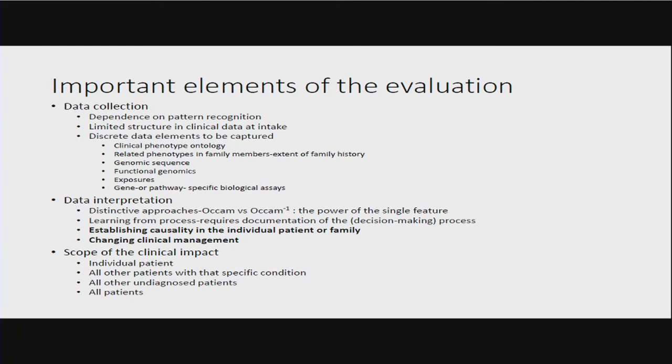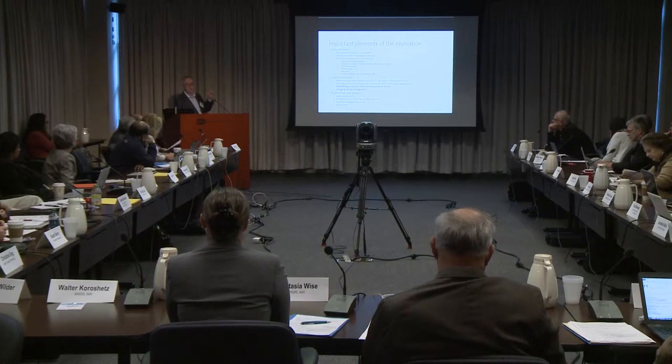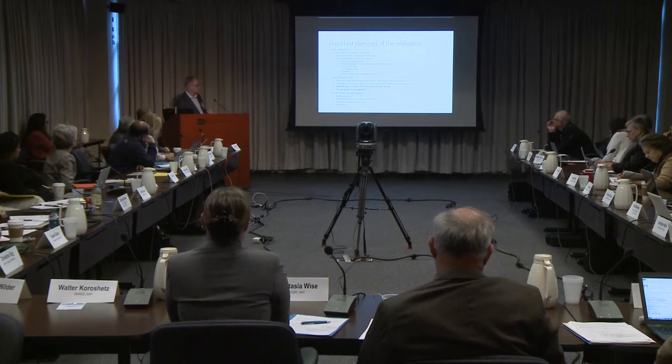One of the first things we did was list all of the phenotypes that could potentially be billed to the NIH. There are ten to the fourth phenotypes if you include absolutely everything in common use across the U.S. When you look at ten to the ninth genotypes in the average genome, you realize just how much of an information content mismatch exists between genomics and clinical medicine.